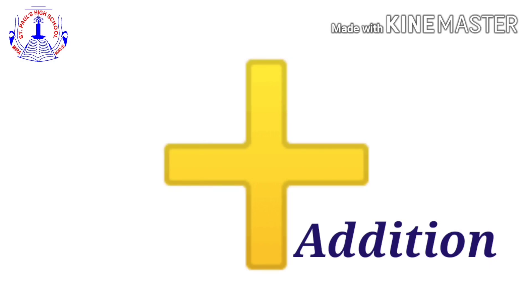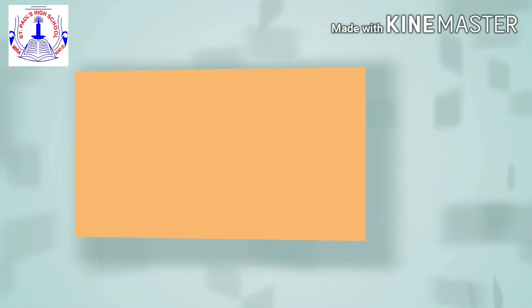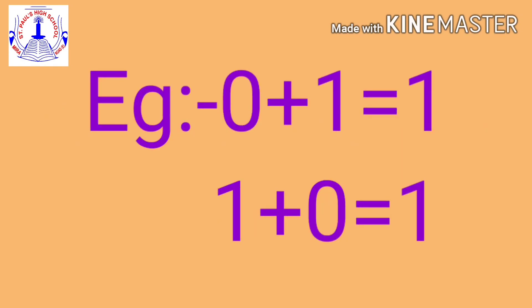Now let's learn how to do addition with one-digit numbers. One more point: if we add any number by zero, then we get the number itself. For example, zero plus one, or one plus zero, equals one.